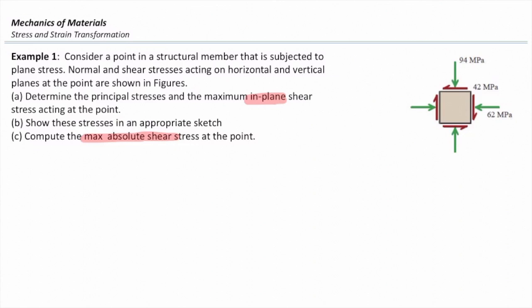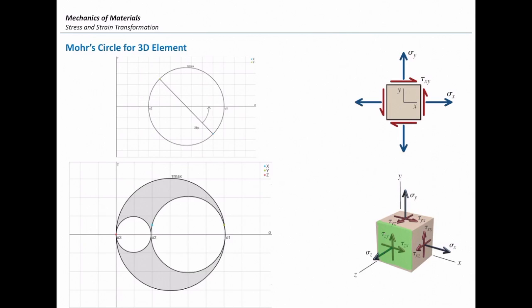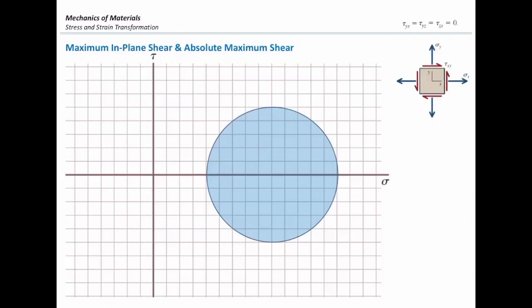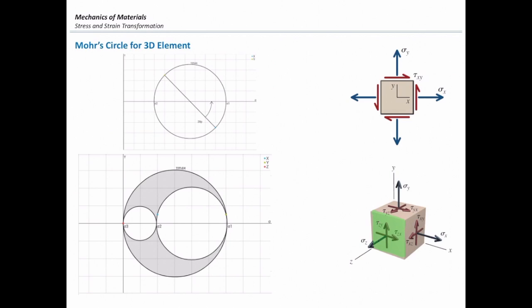To understand this concept, I will use the concept of Mohr's circle, because that helps me visualize this. And that actually requires a three-dimensional stress element and three-dimensional Mohr's circle. Everything we talked about so far is about a two-dimensional stress element and two-dimensional Mohr's circle, but I need to extend this topic into three-dimensional Mohr's circle. For a three-dimensional stress element, there are three circles, two of which are inside another one.